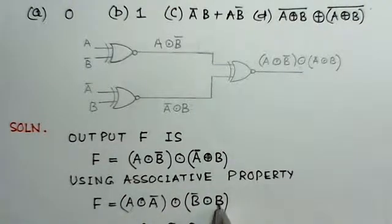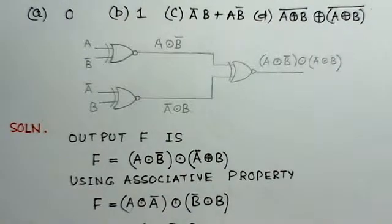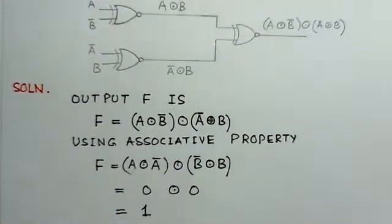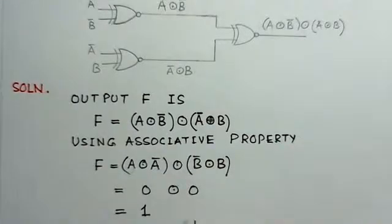Similarly, here B bar and B, they would be complement of each other. Again, this XNOR gives me 1 output when both are same. So, this will also give me 0 output. And once this gives me 0 output, now 0 here, this also 0 output.